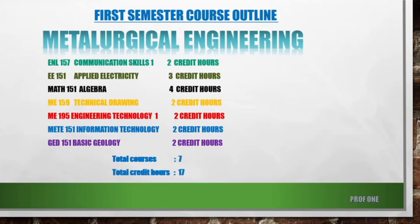Engineering Technology is highlighted in red because it's very demanding and stressful. If you're not determined, you may give up. However, it is a great course — you stand for four hours but it opens your eyes to all engineering technologies in the world: electricity, civil, geology, and more. We also have Information Technology (2 credit hours) and Basic Geology (2 credit hours), making a total of 17 credit hours for the first semester.